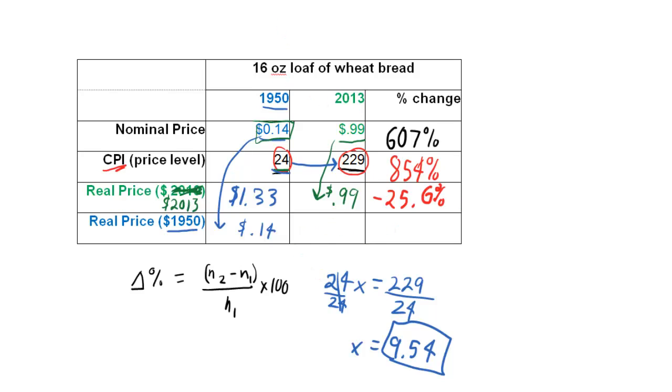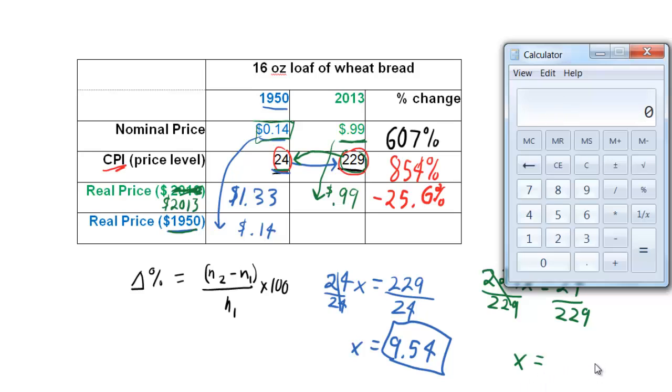Almost home free. All we need to do now is calculate the real price in 1950 terms of the 2013 price of 99 cents. This time we're moving the opposite direction. We're saying, to convert that, what would we have to do to the overall price level of 229 to put it back down to 1950 terms of 24? Well, here's our adjustment factor. Now it's 229 times X equals 24. Divide through by 229. X equals 24 divided by 229. Let's solve that. Divide by 229. X equals 0.105. Let's round it.